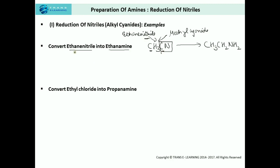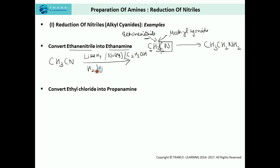To convert ethane nitrile into ethane amine, we can use any of the reducing agents: lithium aluminium hydride, sodium amalgam in presence of ethanol, or hydrogen in presence of Raney nickel. This converts it into ethane amine having one more carbon atom as compared to the parent cyanide group.